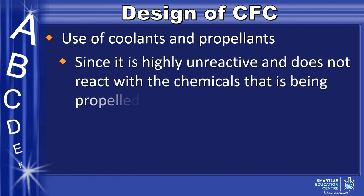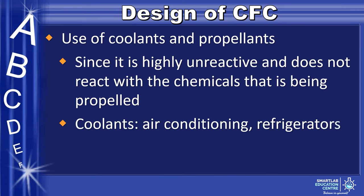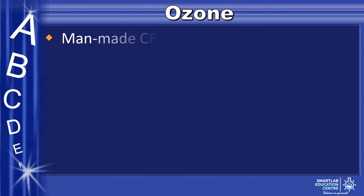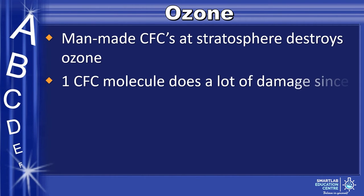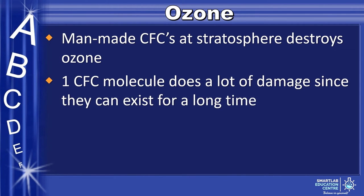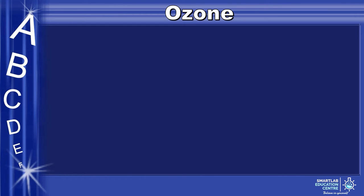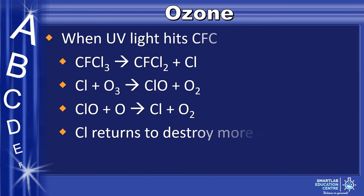An example of coolants where CFCs are used is in air conditioning and refrigerators. Man-made CFCs in the stratosphere destroy ozone, and one CFC molecule does a lot of damage since they can exist for a long time. When UV light hits the chlorofluorocarbon, it undergoes reactions that destroy ozone, while producing chlorine which returns to destroy even more ozone molecules.